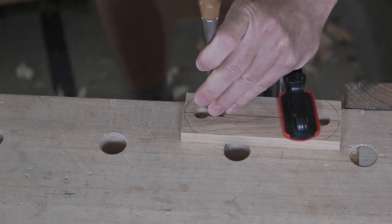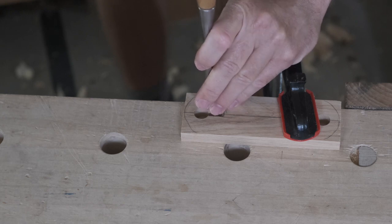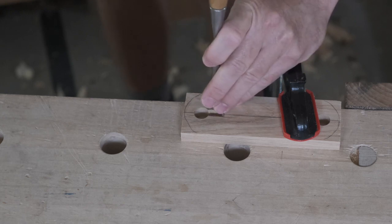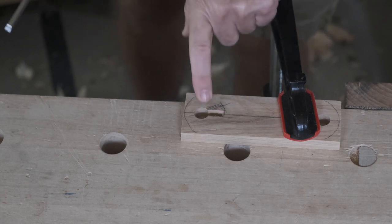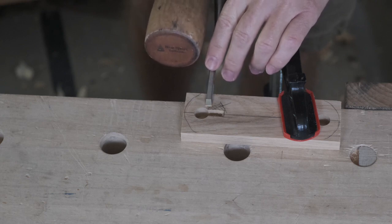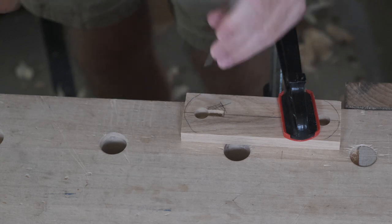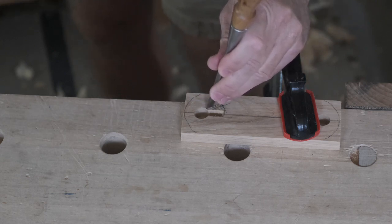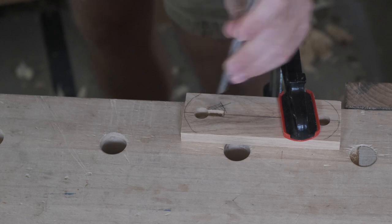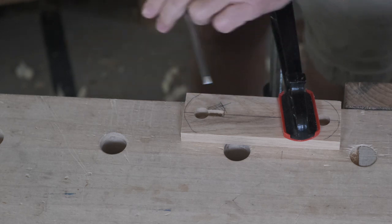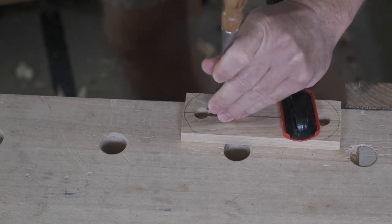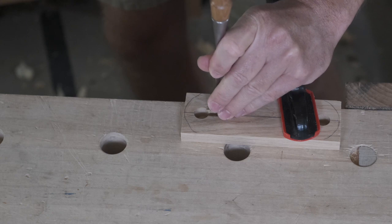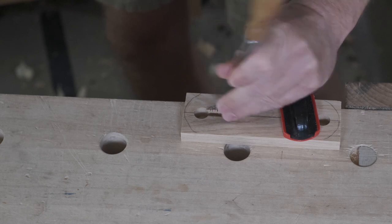Now here, I've got to make a stop cut because if I start chopping across the grain, it's going to want to tear out or break out along the grain line. So I had to go through here and sever that grain. Not real deep. And now I can turn the chisel across the grain and start making my chops.